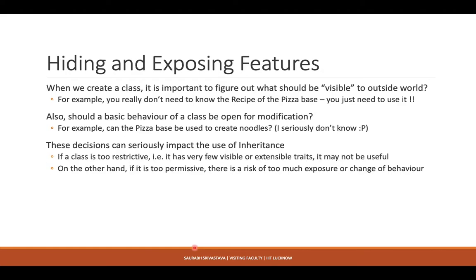Whenever you are going to use inheritance in designing your system, one key question is what exactly should be the features visible to the outside world when you create a class. You might remember from our earlier C++ examples that we had private and public sections of members. We are going in that direction — what should be private and what should be public. We'll look at private and public in probably the next lecture.